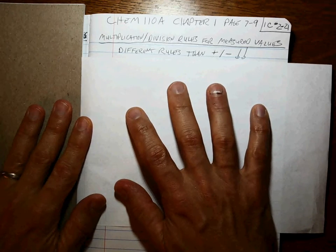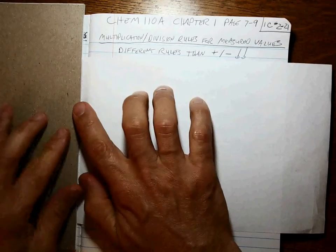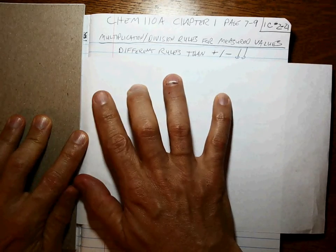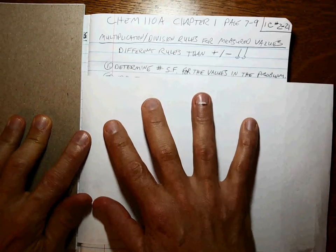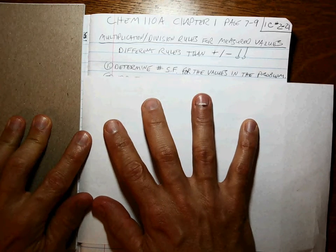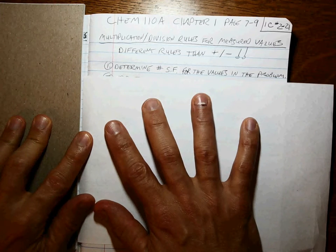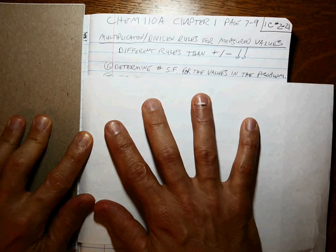So first thing you need to be able to do is what we've already done, which is determine the number of sig figs in any measured number. You should remember how to do that. If not, look at the video for 1C, number one.